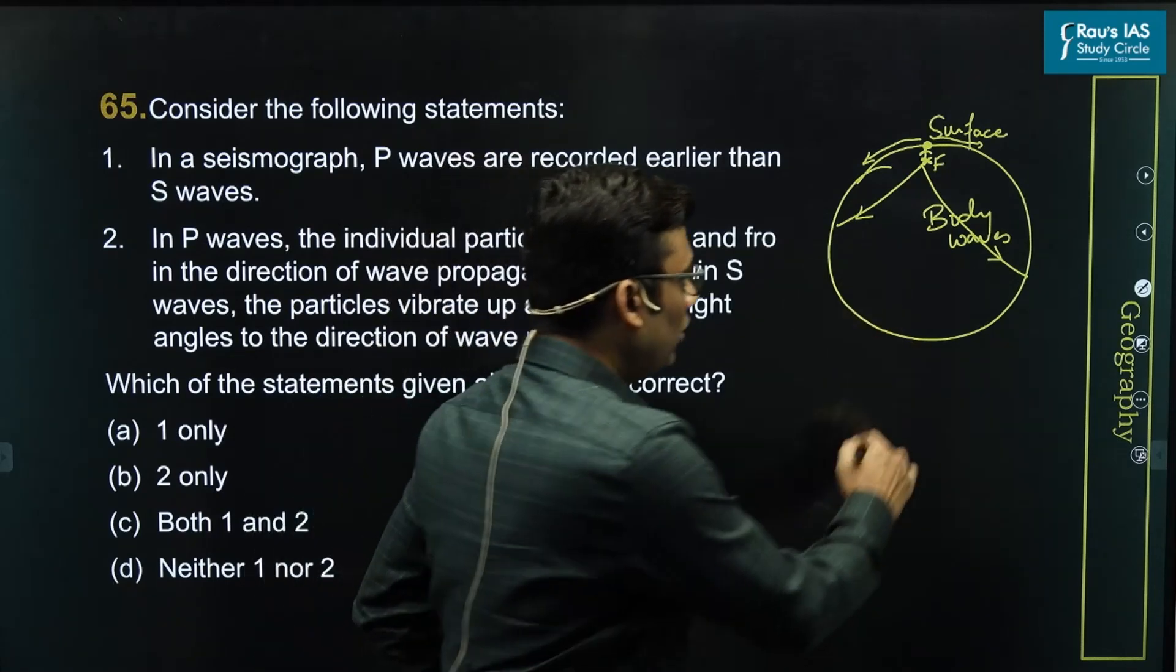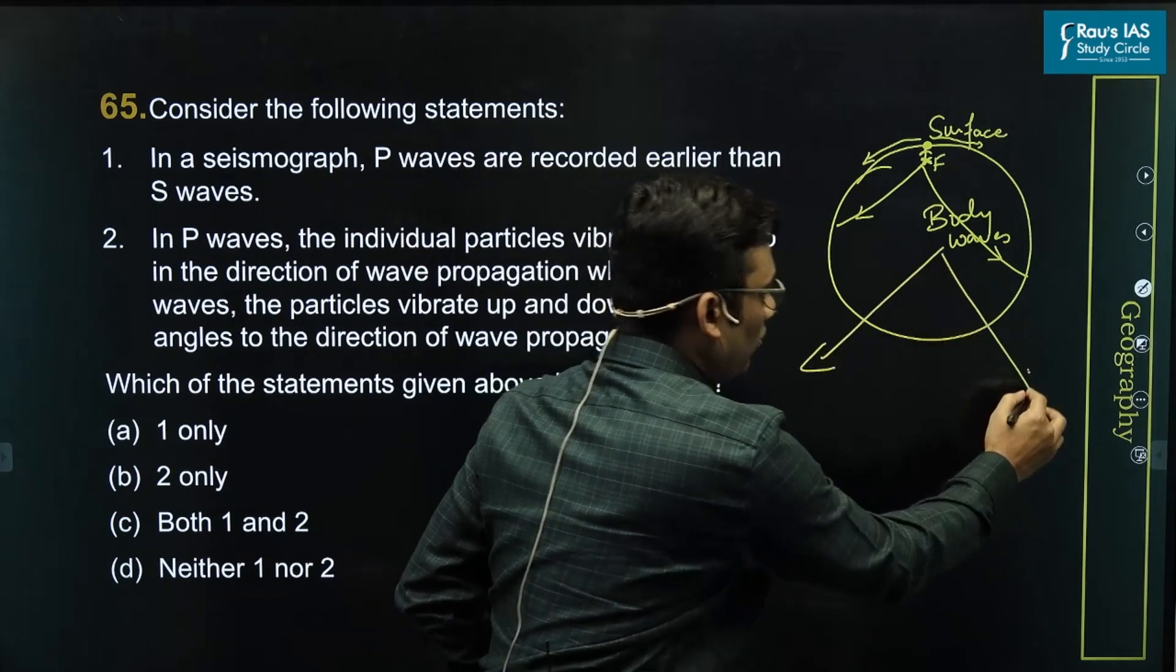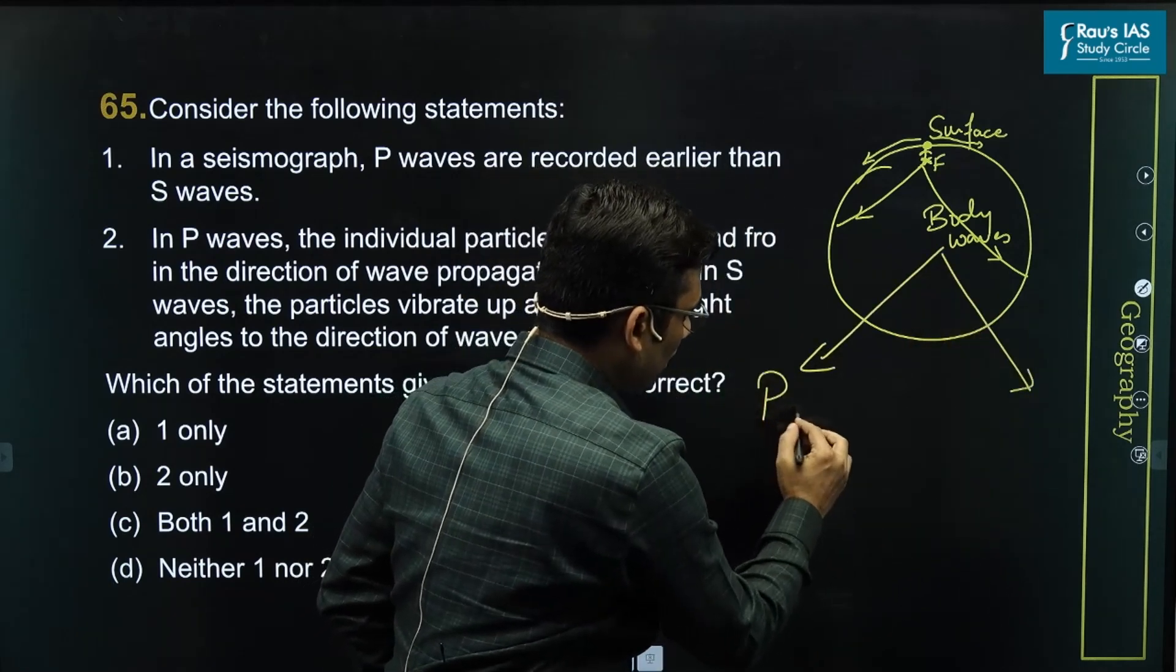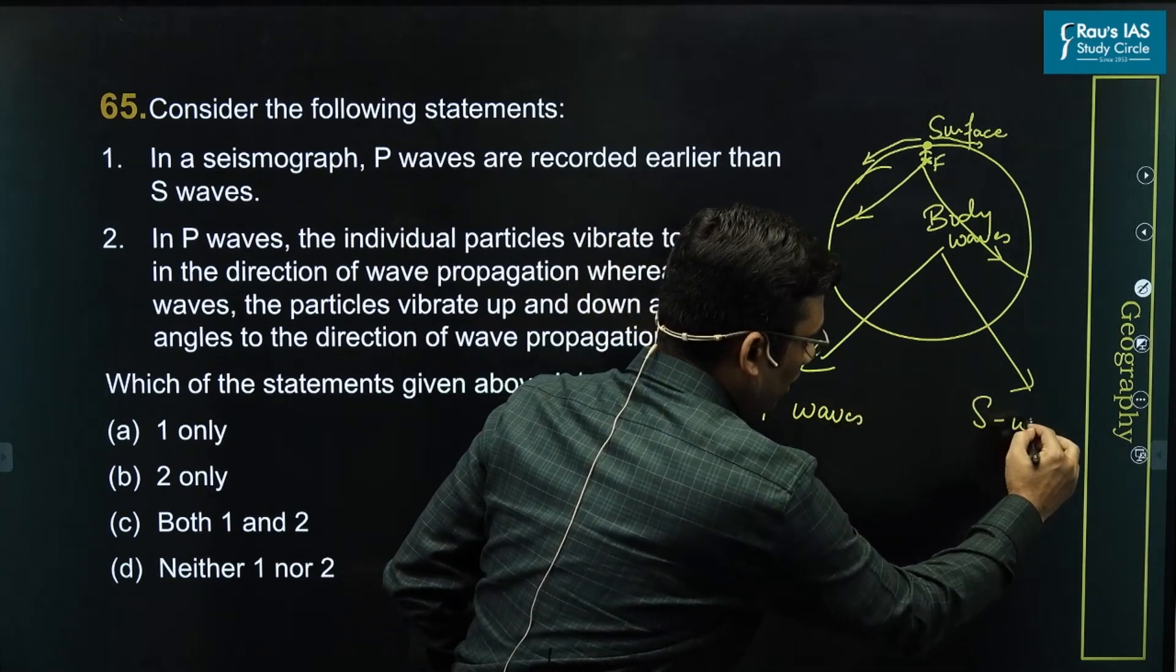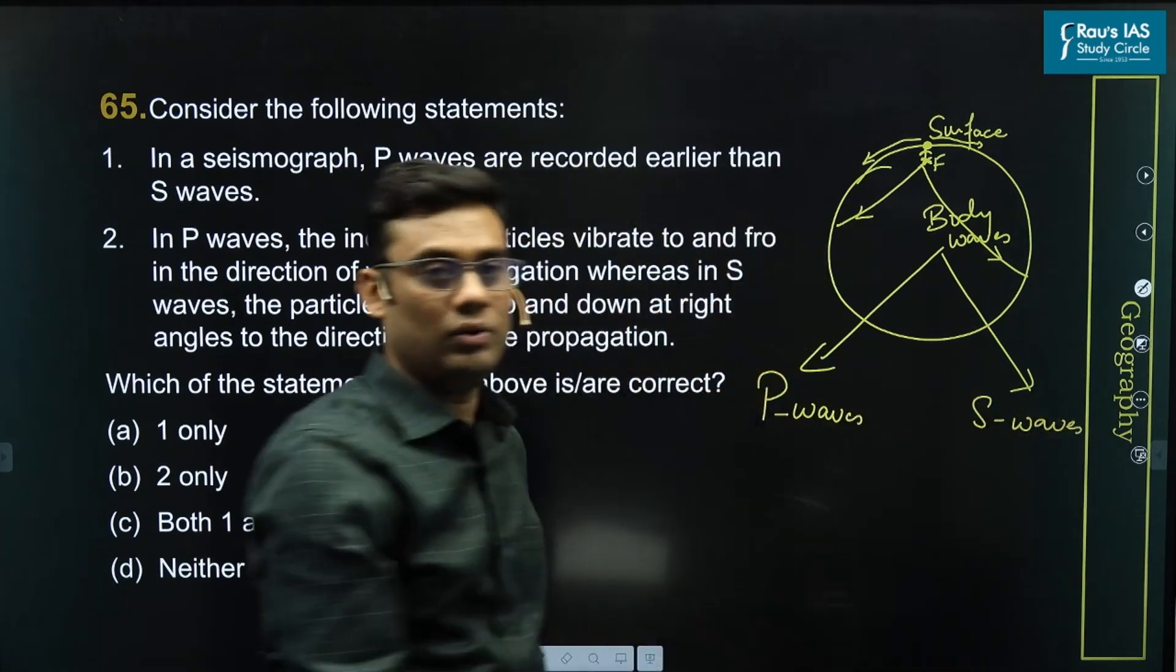Body waves are of two types. The first which are called P waves or primary waves and the second one called S waves which are secondary waves.